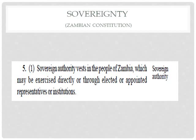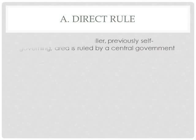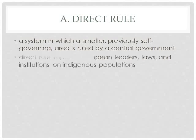From that definition, you have an idea of what a sovereign state is — it's the people who have a sovereign system. Now let's look at answer A: direct rule. Direct rule is a system in which a smaller, previously self-governing area is ruled by a central government. The older, weaker system gets taken over.